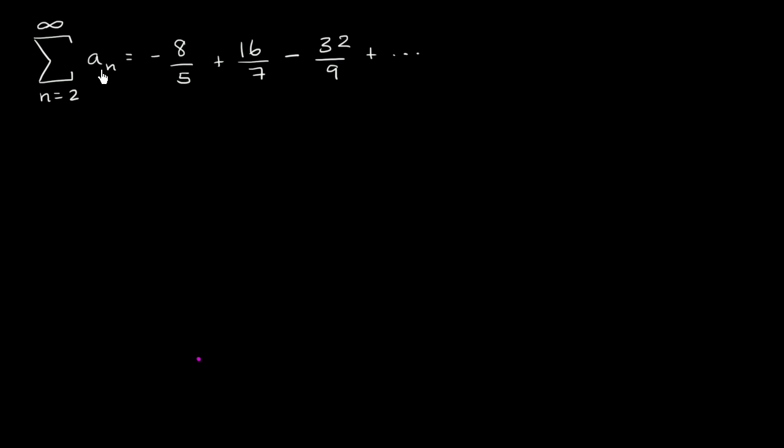Let's say that we're told that this sum right over here, where our index starts at 2 and we go all the way to infinity, that this infinite series is negative 8 fifths plus 16 over 7 minus 32 over 9 plus, and we just keep going on and on forever.